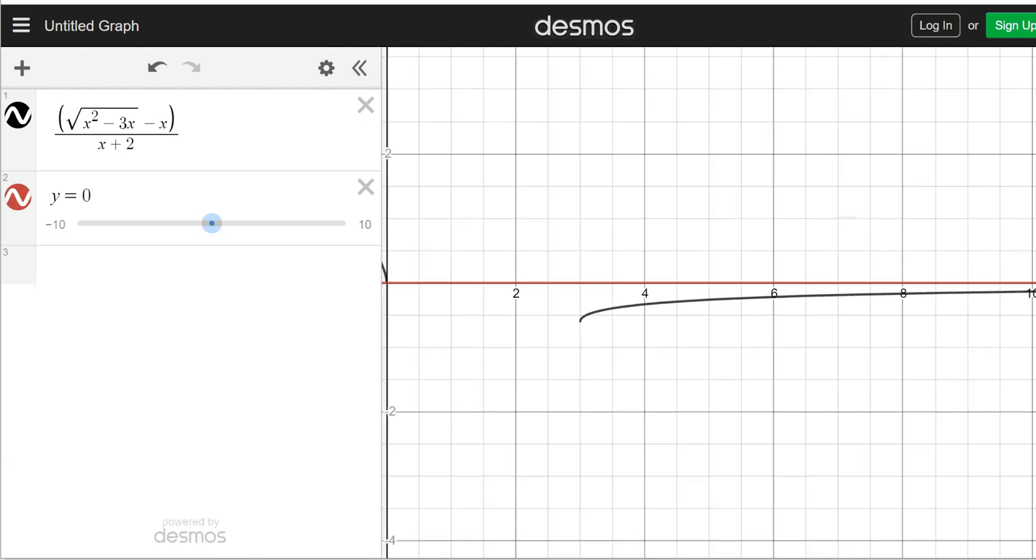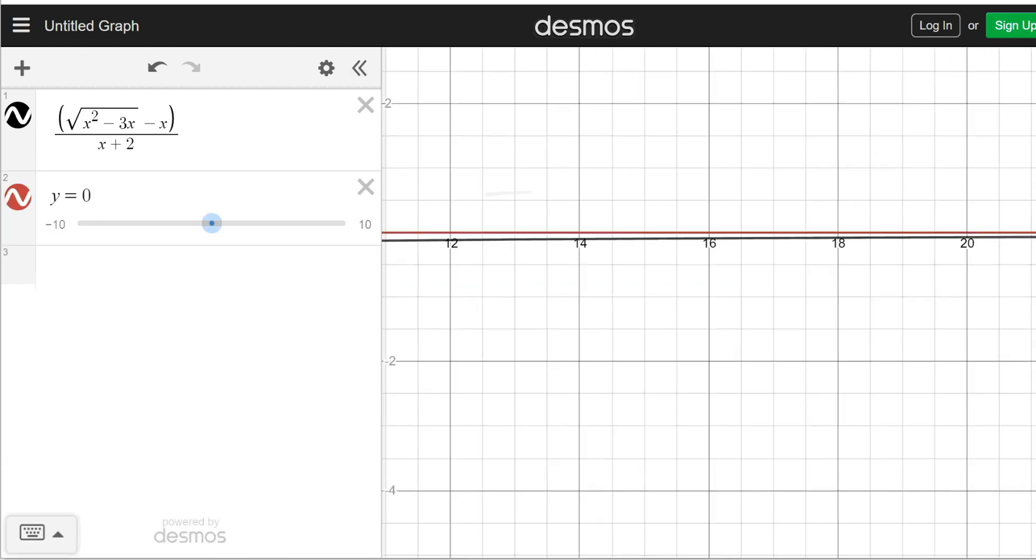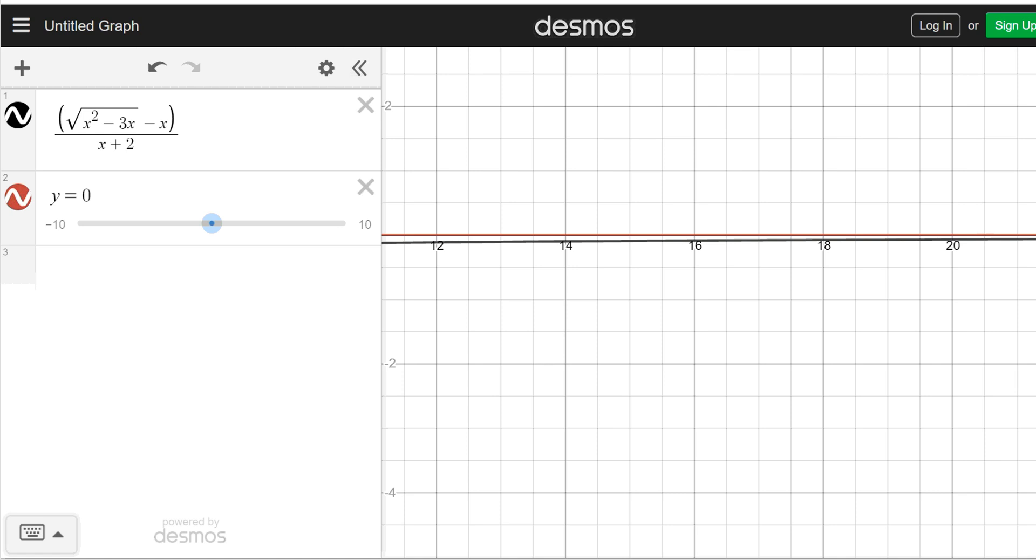What happens is when you zoom in to the right, you can try to use two different colors. If you think about the one in black, that is the original function, f of x. When you highlight the second function in red, that's going to be the new function. Notice how they are ultimately the same function. Of course, it doesn't seem like it at first.